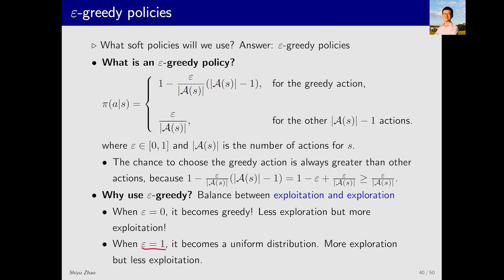On the other hand, if epsilon equals 1, the selection probability for every action becomes equal. In this scenario, exploration is more and exploitation is less. For example, consider a case where epsilon equals 1 and there are 5 actions available. Each action has a probability of 0.2 of being selected.